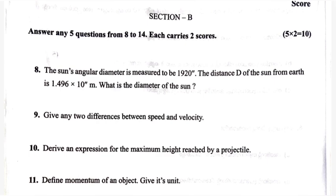Question 8: The sun's angular diameter is measured to be 1920 seconds. The distance D of the sun from the earth is 1.496 into 10 raised to power 11 meter. What is the diameter of the sun?